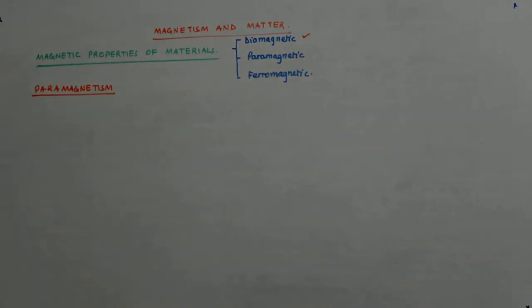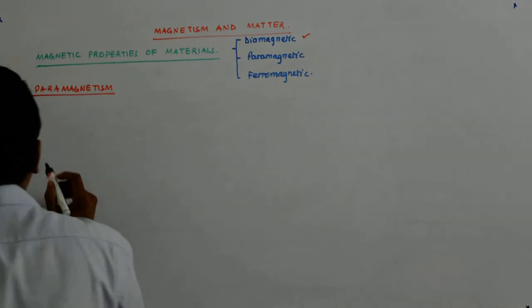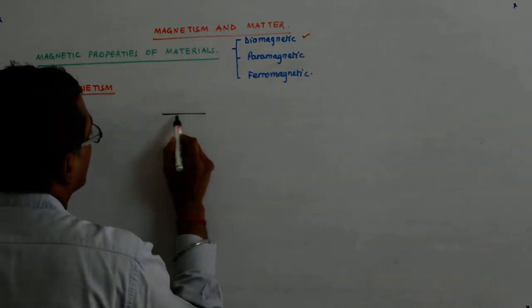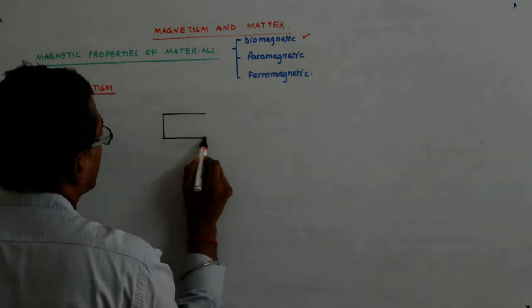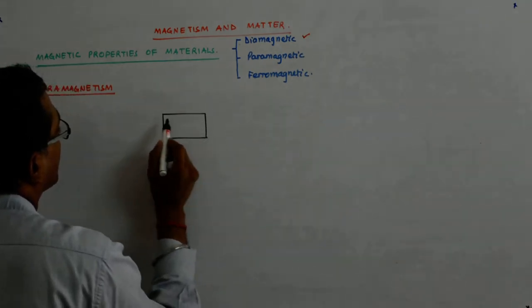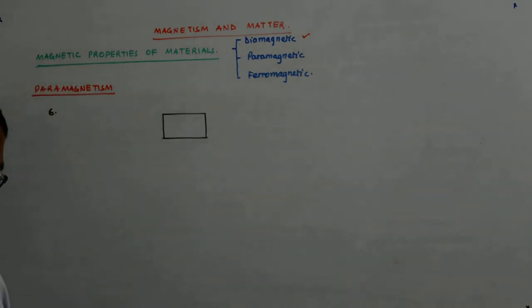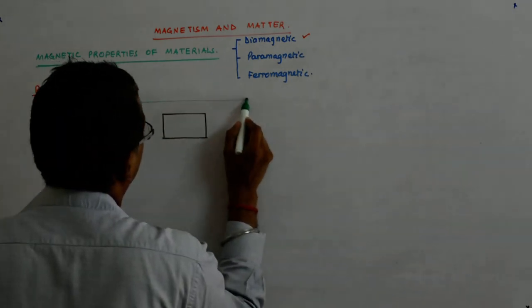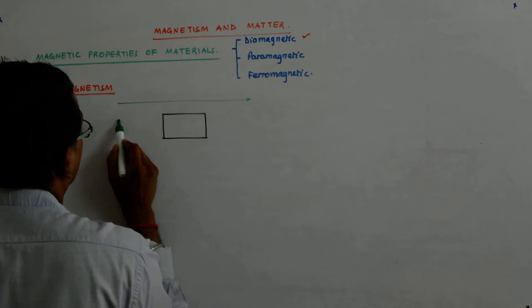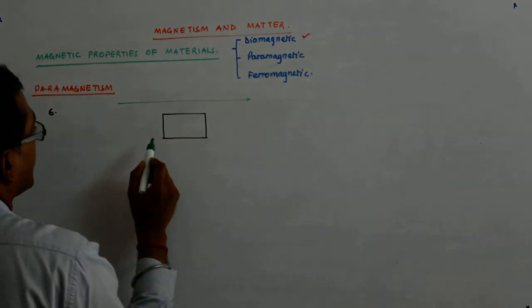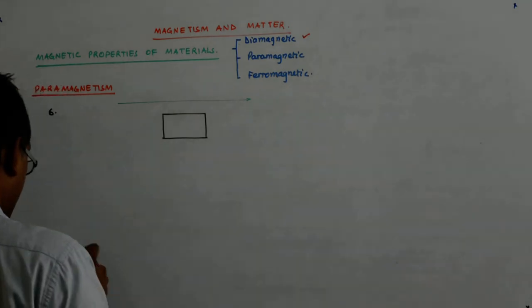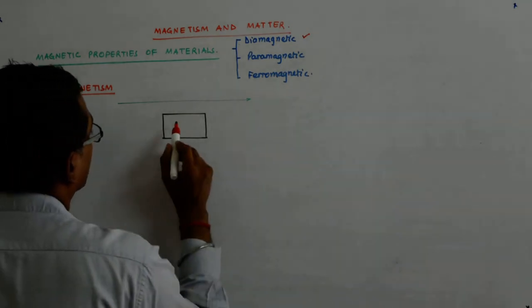Now the sixth point in paramagnetism is that we know that if this is the material and this is my magnetic field, then what happens? If the direction of the magnetic field is like that, then the response of this is like that.